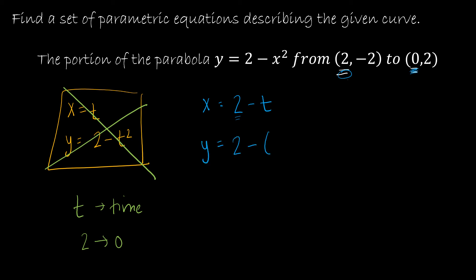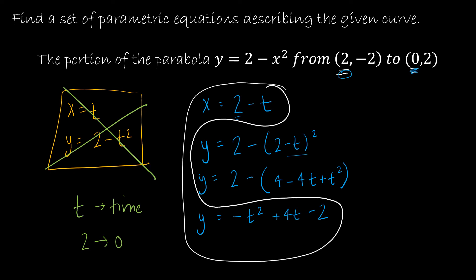y is 2 minus 2 minus t quantity squared. So, of course, that's just algebra, and we're really good at algebra. So if I'm squaring this, I'm going to get 4 minus 4t plus t squared. But I'm subtracting all of that. So that's going to give me negative t squared, and then positive 4t, and then this is a minus 4 and a plus 2, so that's minus 2. So my set of parametric equations is right here, and that is for 0 is less than t is less than 2.